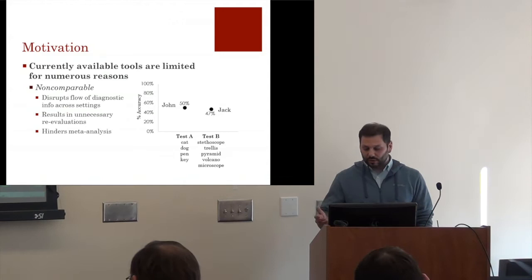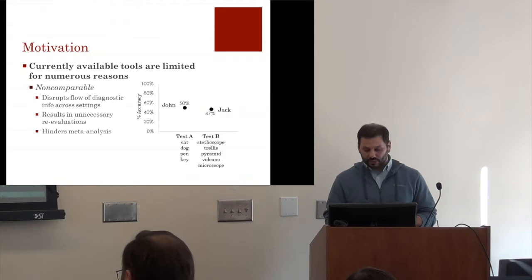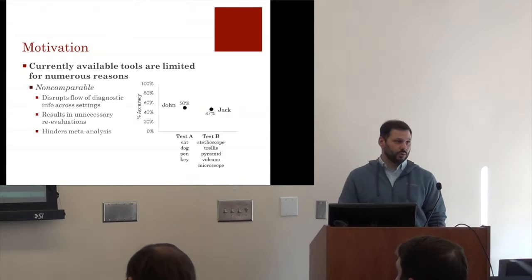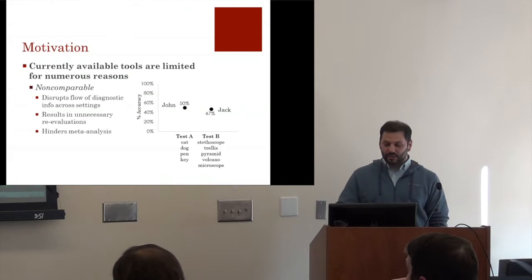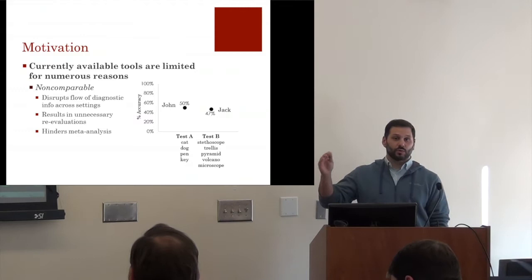Another limitation is that current confrontation naming tests don't allow direct score comparison across different diagnostic tools. Imagine one person sees a test with items like 'cat' and 'dog,' while another sees 'stethoscope' and 'microscope.' Even if the second person gets a lower percentage score, it's very hard to argue they are more impaired, because that test includes much harder items. This challenge disrupts the flow of diagnostic information in clinical settings.